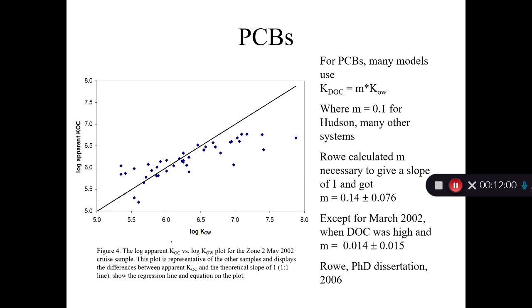So here's another example. This is from the Delaware River. My student, Amy Rowe, she's my first PhD student. She's now a county extension agent for Rutgers. She went out and measured these blue symbols. So that's the log of the apparent KOC value plotted versus log KOW. And you can see the black line is the one-to-one line. And you can see her data doesn't really fall on the one-to-one line.